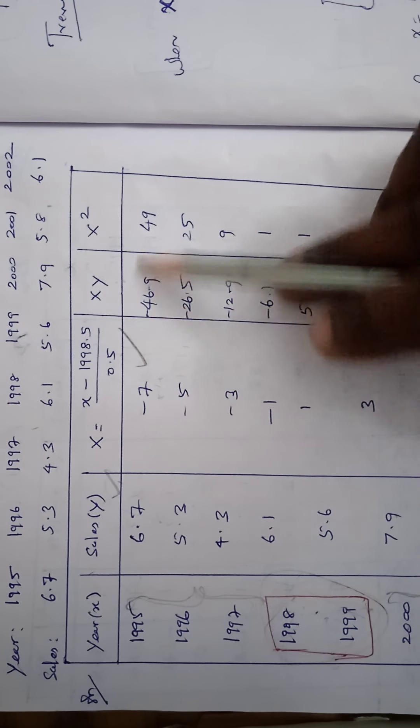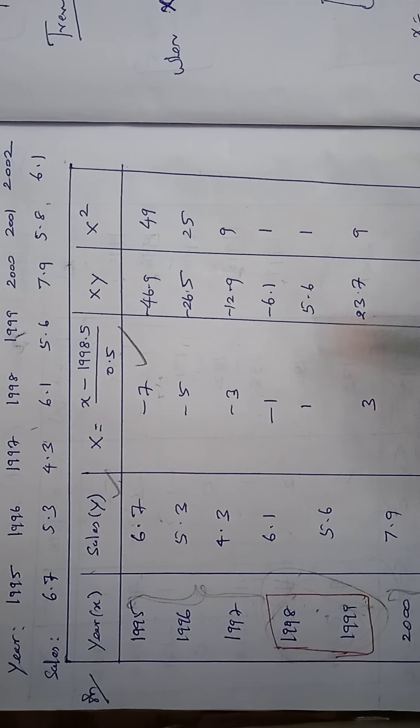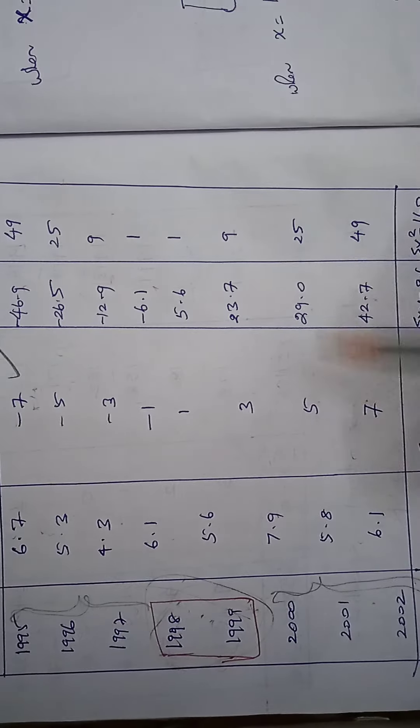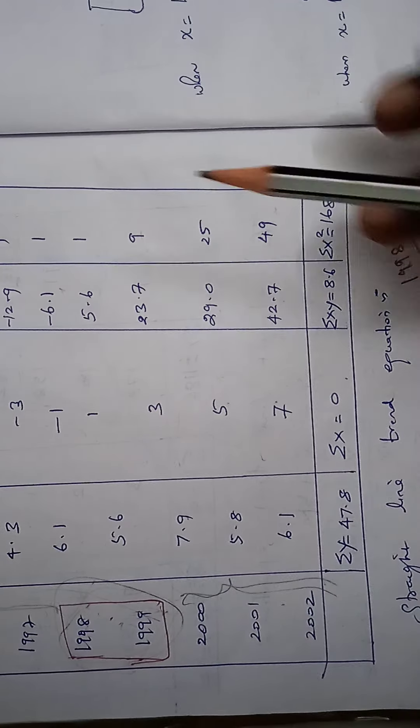So minus 7 square is 49. So 25, 9, 1, 1, 9, 25, and 49. So the Sigma X square value is 168.